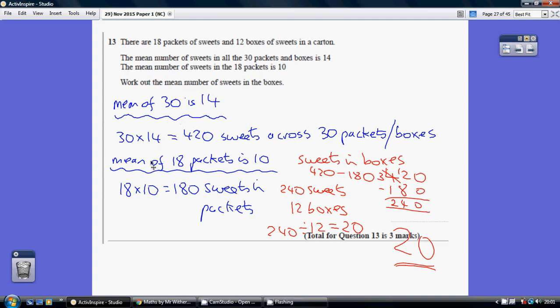Now we're also told that the mean of the 18 packets is 10. So how many sweets have we got in these 18 packets? Well 18 times 10 equals 180. So 420 sweets in total of which 180 are in the packets.